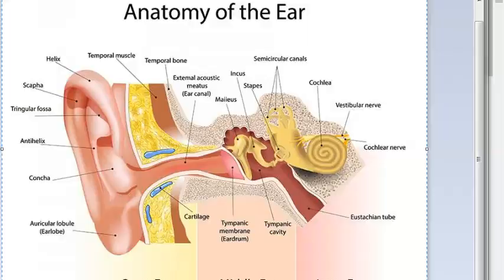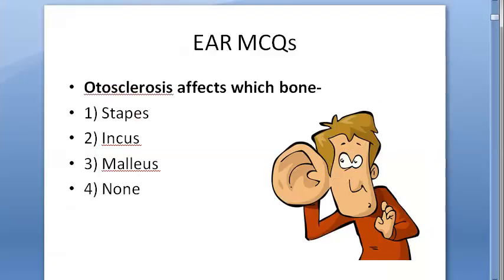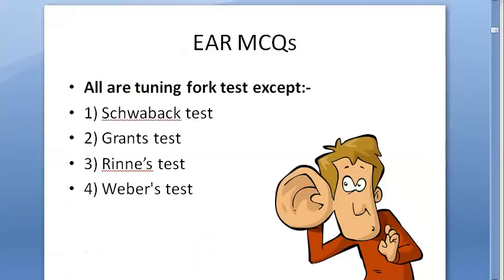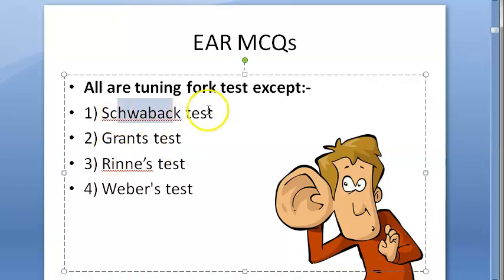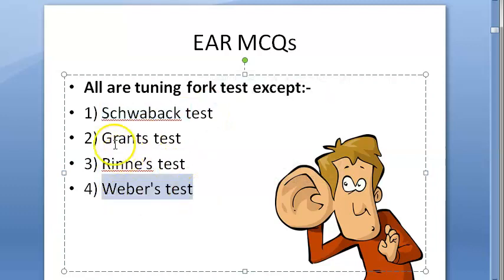Let us move on. All tuning fork tests except which one? The answer is the Schwabach test. You have seen the Rinne's test and Weber's test — all are tuning fork tests. The answer here is B.